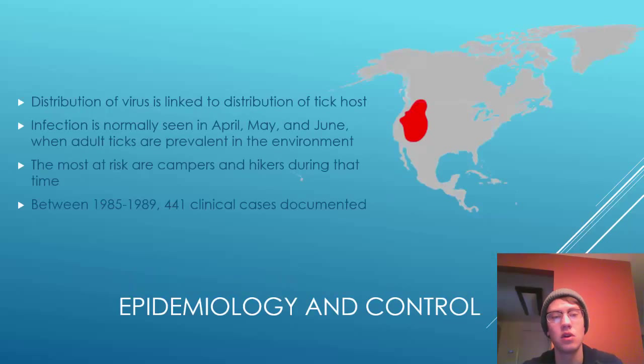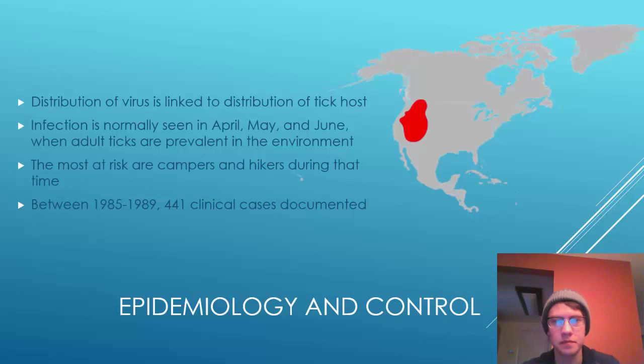The distribution of the virus is linked to the distribution of the tick host. The Rocky Mountain wood tick is normally found around Colorado, California, Utah, and up into Canada. Infection is normally seen in April, May, June, and July, because that's when adult ticks are prevalent in the environment.